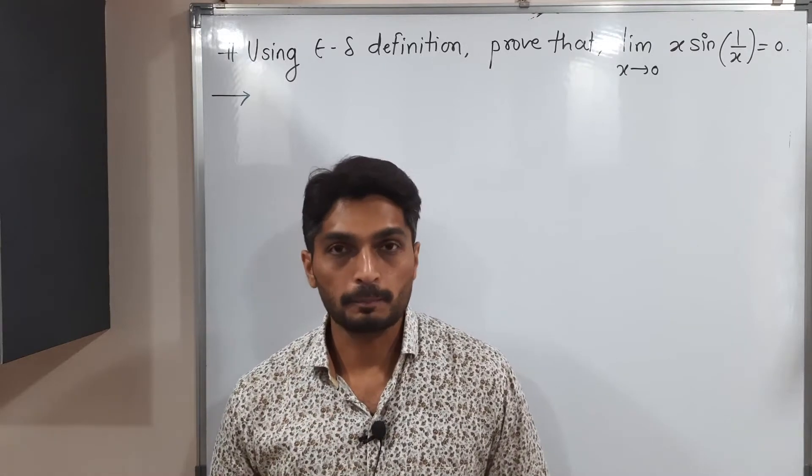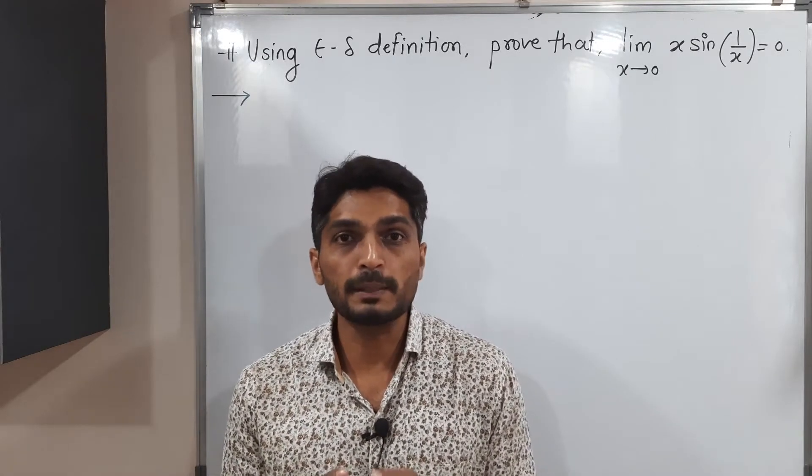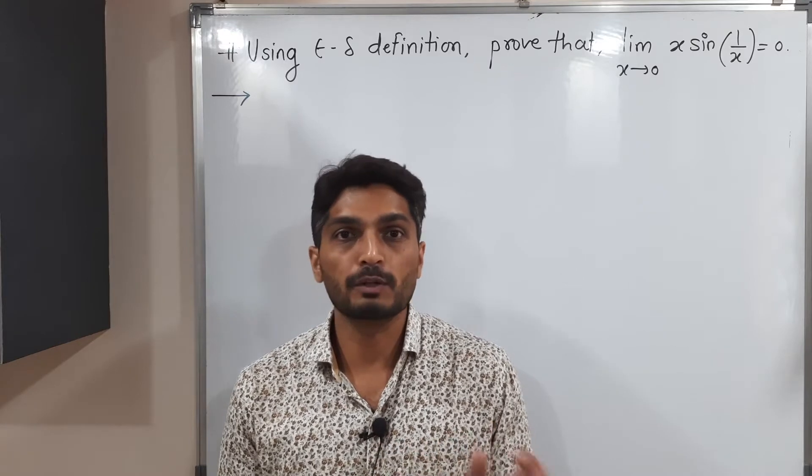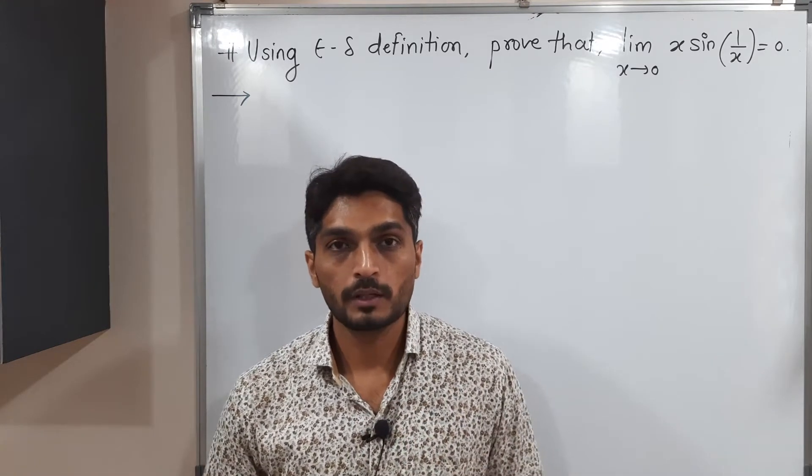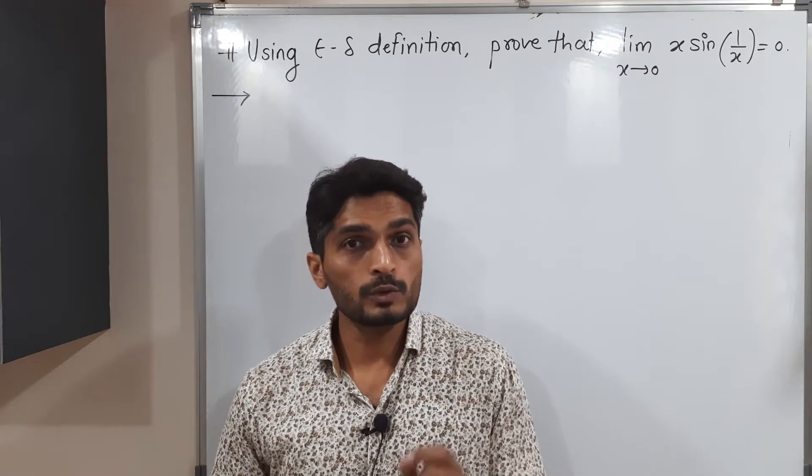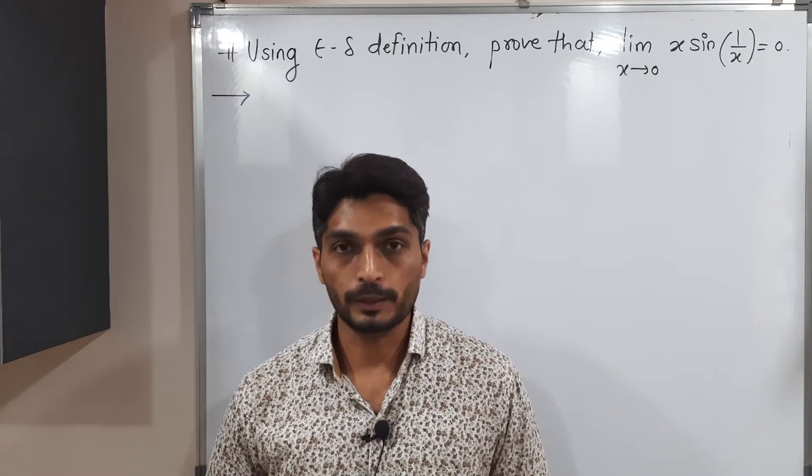Let us discuss this example. In this example, we have to prove that limit x sin 1 by x is equal to 0, where the limit is x equals to 0. But here we have to use epsilon delta definition to prove it.